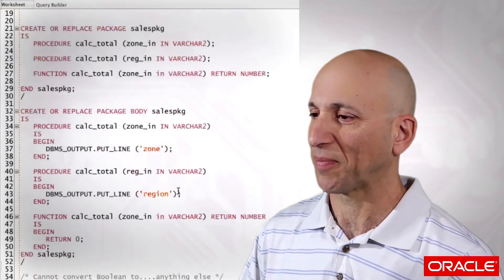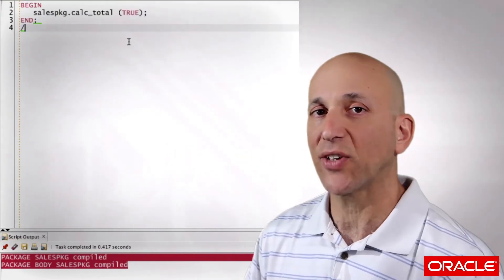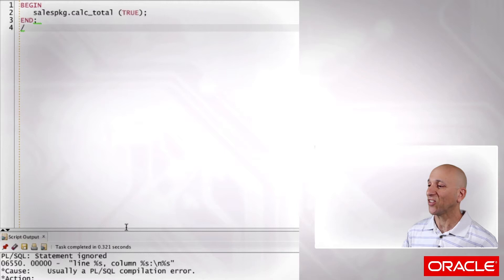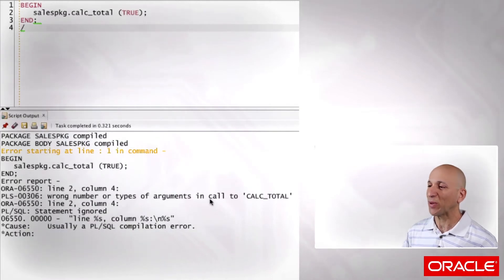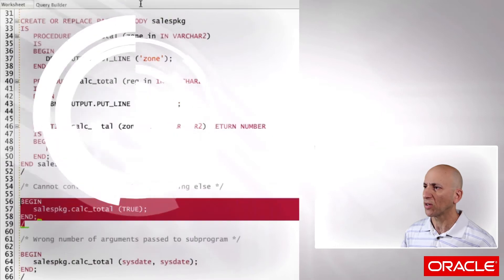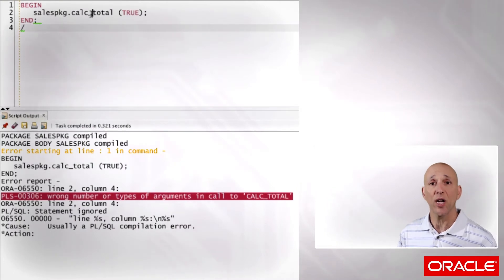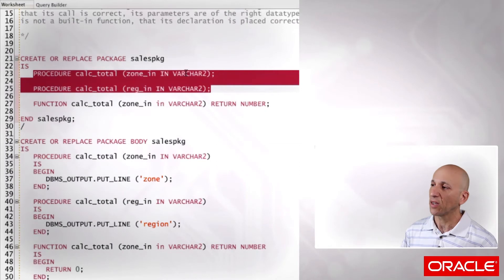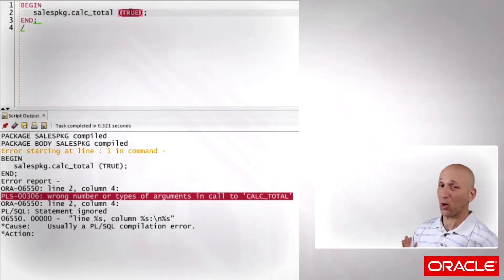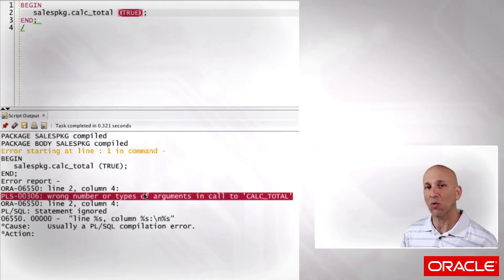As you can see in my call to the sales package calctotal program, I'm passing it a value of true. Let's see what happens when I run this code. And the answer is compilation error, there it is: 306, wrong number or types of arguments in call to calctotal. Why did that happen? Well, let's go back to the definition of the package. I have two different procedure overloadings and I called a procedure. Oracle needs to look at the two procedure definitions, not the function. It's got a string for zoneN and a string for regionN. The question is, is this a string? No, it's not a string, it's a Boolean value. Can it be converted to a string? No, you can't convert Booleans to strings. So Oracle says that's the wrong type for this argument.